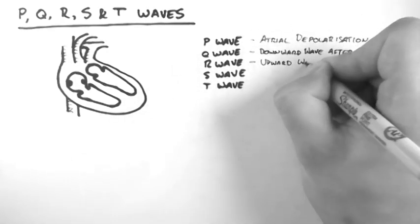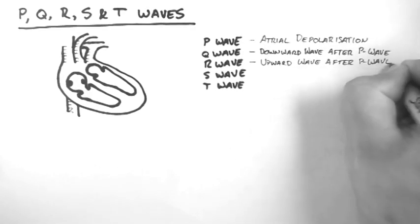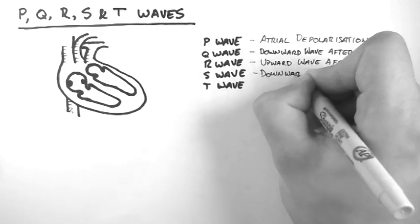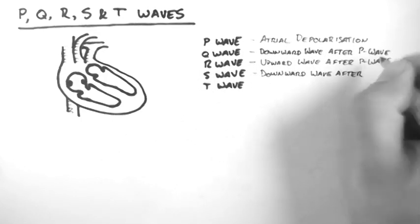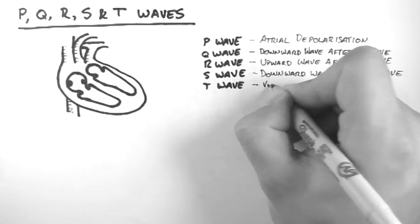The R wave is an upward wave which follows a P wave. The S wave is a downward wave which follows an R wave. And the Q, R and S waves are associated with ventricular depolarisation.